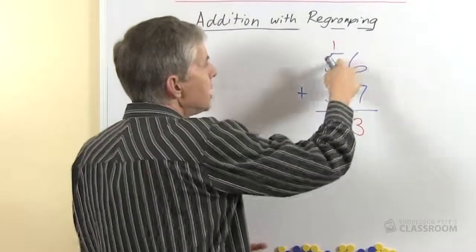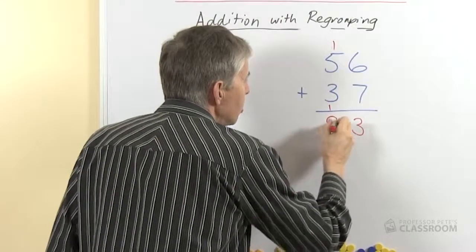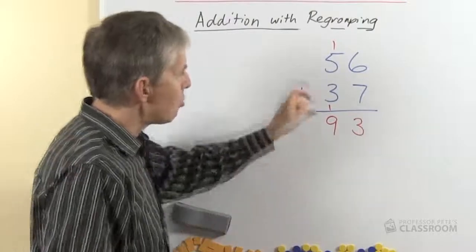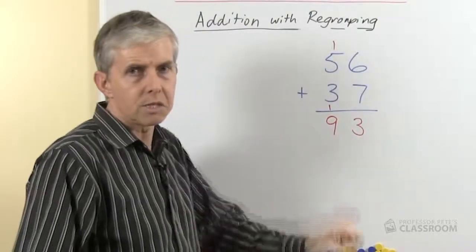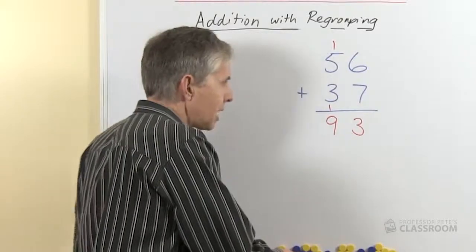Then we do the tens. 5 and 3 is 8 and 1 is 9. We could refer to that as 50 plus 30 plus 10, but one of the benefits of using algorithms is that you're only dealing with single digit sums at the one time.